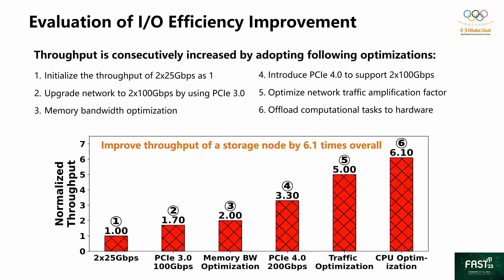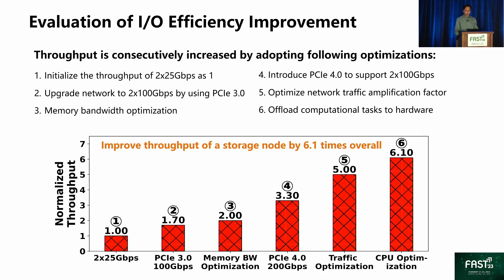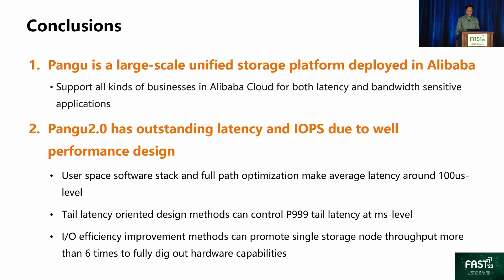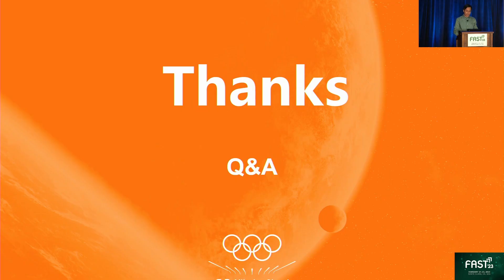After using the above methods to improve performance, the throughput can be increased consecutively. Taking the throughput of our 2×25 Gbps system as a baseline, from method one to six the overall throughput can be improved by 6.1 times. In summary, Pangu is a large-scale unified storage system deployed worldwide in Alibaba Cloud. The second generation of Pangu achieves outstanding latency and IOPS, benefiting both latency-sensitive and throughput-sensitive users. That's all for my presentation today. Thank you, and please feel free to ask any questions.